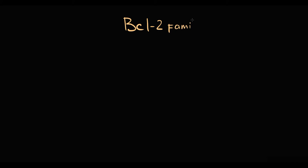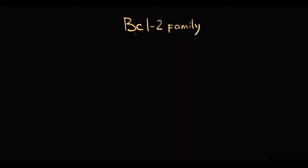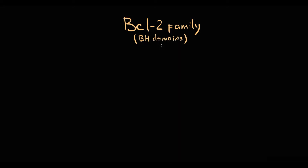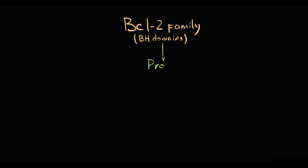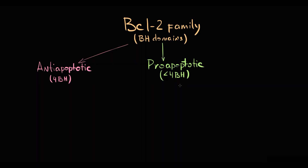To explain this, we have to know about the so-called BCL2 family of proteins. They are called this because they have BCL2 homology domains, so-called BH domains. This family of proteins is divided into two groups: pro-apoptotic and anti-apoptotic proteins. All anti-apoptotic proteins have 4 BH domains, while all pro-apoptotic proteins have fewer than 4 BH domains. Moreover, the quantity of BH domains in pro-apoptotic proteins differs.